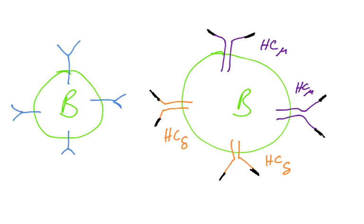So the purple ones might be coded from constant mu and that would give you IgM. The orange ones would be coded from constant delta and that would give you IgD. But they all have the same variable region because they use the same VDJ region.